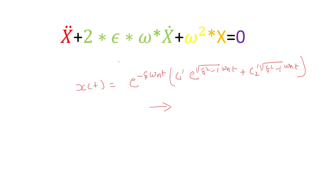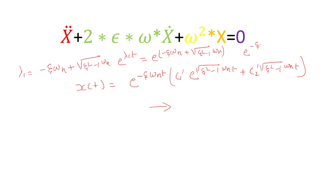Since both λ1 and λ2 share the common factor −ζω_n t in their exponentials, we factor it out. The final solution becomes: x(t) = e^(−ζω_n t) · [c₁' e^(ω_n√(ζ²−1)·t) + c₂' e^(−ω_n√(ζ²−1)·t)]. This is the complete general solution to the free vibration equation.